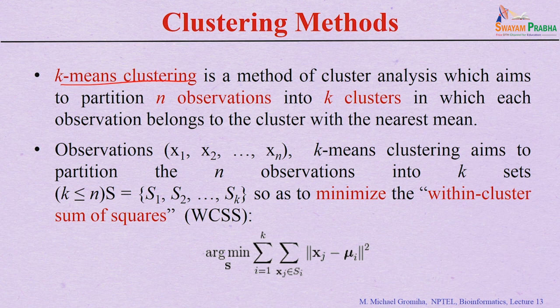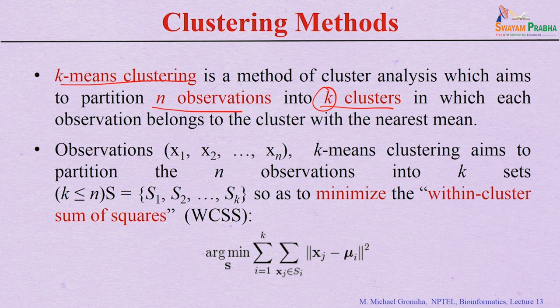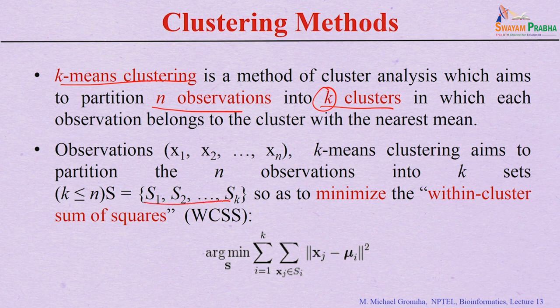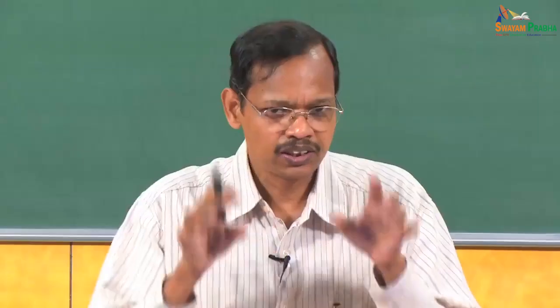CD-HIT uses clustering techniques — one popular technique is k-means clustering. K-means clustering is a method of cluster analysis that aims to partition n observations into k clusters, where each observation belongs to the cluster with the nearest mean. The algorithm tries to minimize the within-cluster sum of squares — the distance between any sequence and the cluster mean should be minimized.